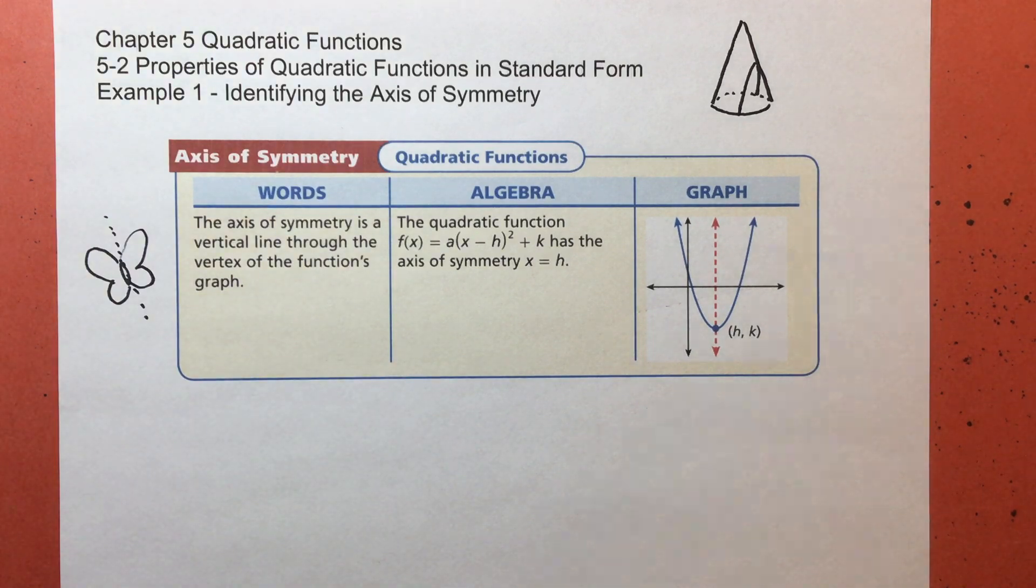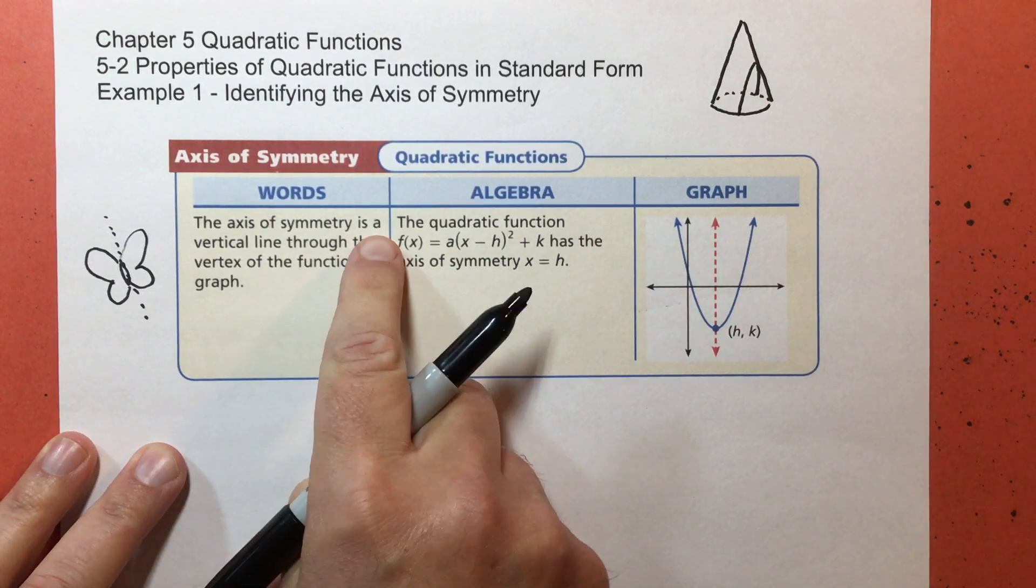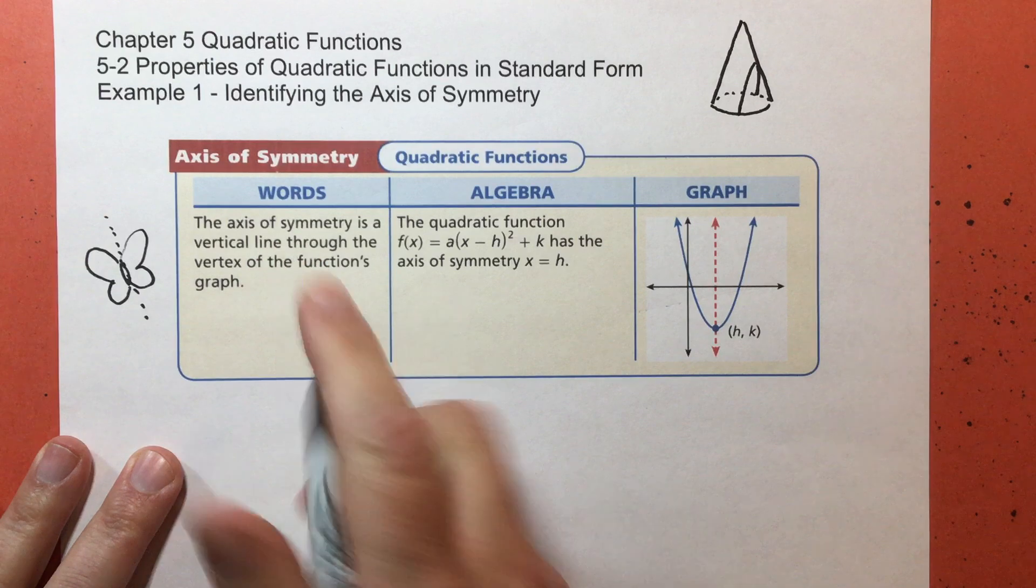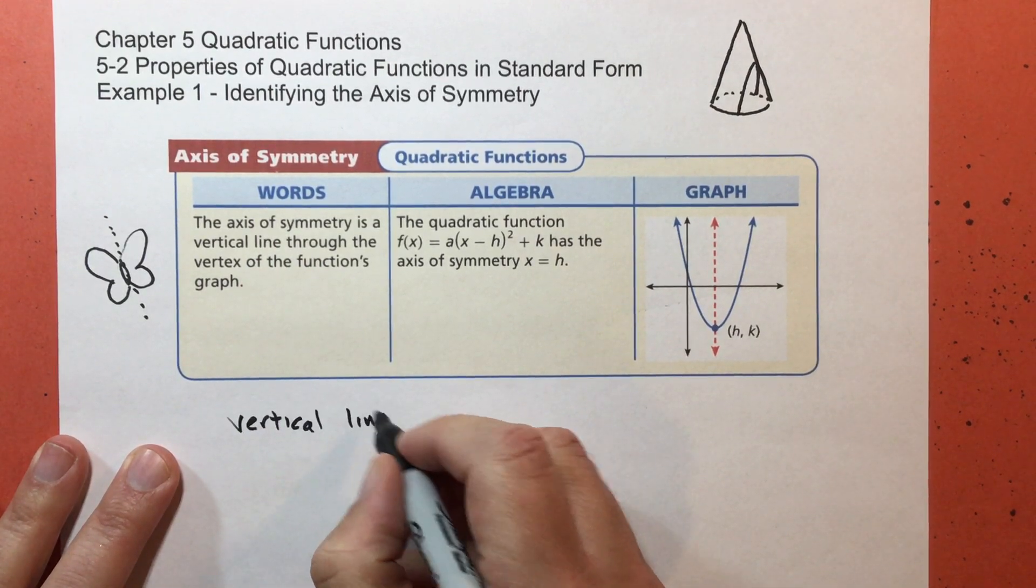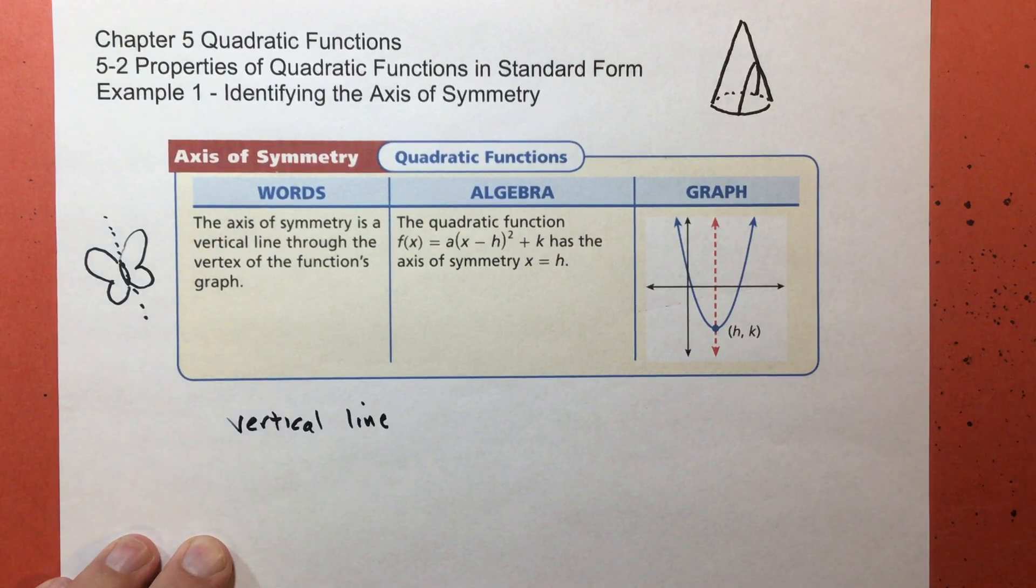There's a couple of things that I want to point out here. First of all, the axis of symmetry is a vertical line. It is not a horizontal line.